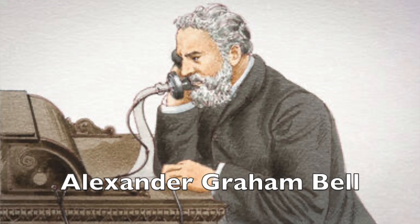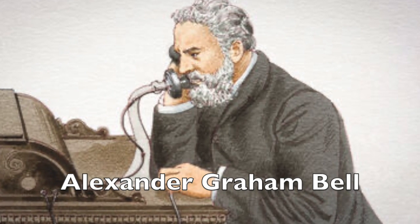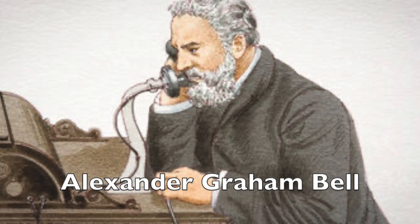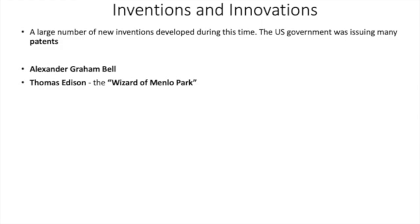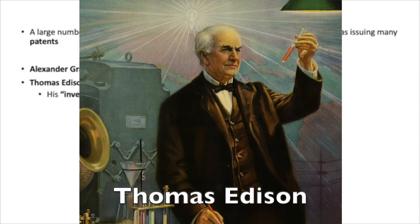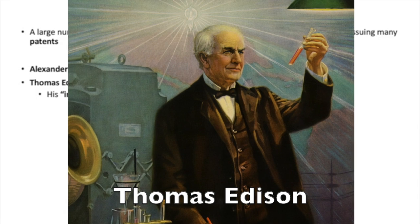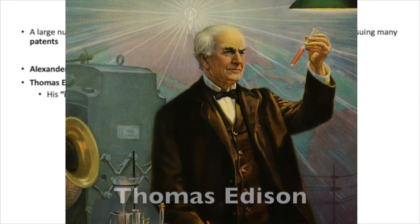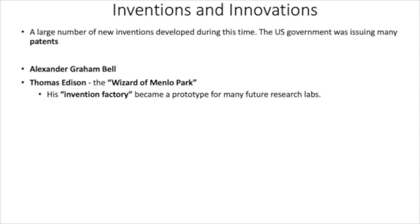Some examples of these inventors was Alexander Graham Bell, who, of course, invented the telephone, and then Thomas Edison, who was also known as the Wizard of Menlo Park in New Jersey. For his many inventions, Edison ended up having a record 1,000 patents issued in his name, and his invention factory, which he referred to it as, became the prototype for many future research labs. So Thomas Edison, certainly one of the inventors we want to be familiar with.